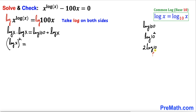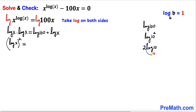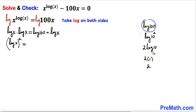This is called a common log and by default the base is 10. Now log(10) with base 10 — if the base and argument are the same, the log equals 1. So log(10) base 10 equals 1, therefore log(100) equals 2. So the right hand side becomes 2 plus log(x).